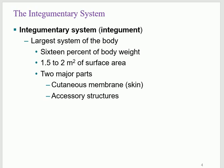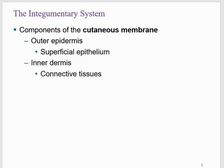The accessory structures include nails, hair, and glands. Together, these are called accessory structures. The cutaneous membrane, which is another name for skin, is itself two parts: the outer layer and the inner layer. The outer one — the one you touch — is called the epidermis. The inner one is called the dermis.